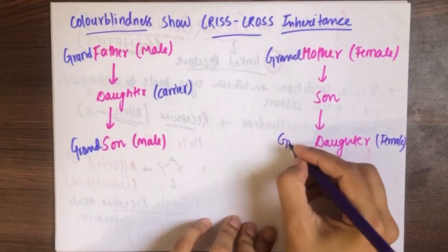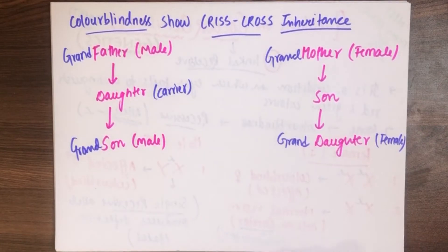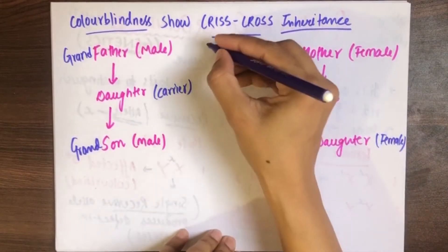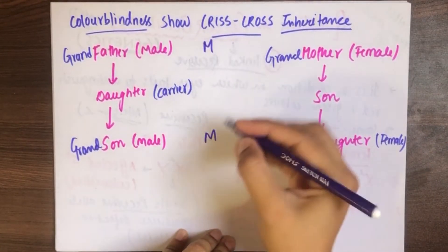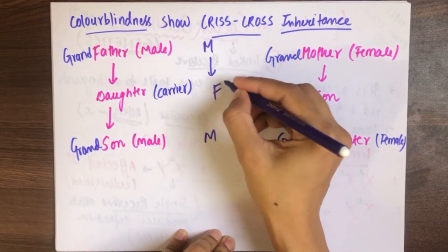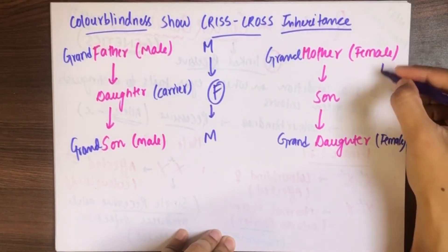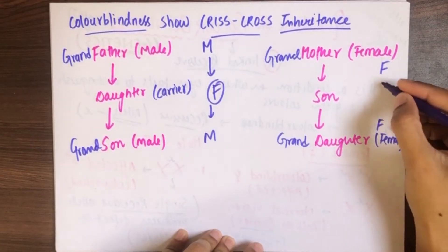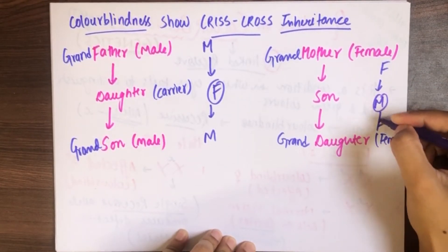ये बन जाए ही grandmother and this will be granddaughter. तो इसको बोलते हैं criss-cross inheritance: male से directly male में नहीं जाएगा, बीच में female की help लेगा. और यहाँ पर भी female से directly female में नहीं आएगा, बीच में male की help लेगा.